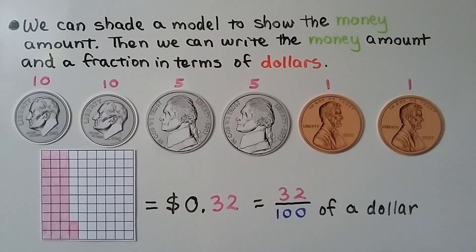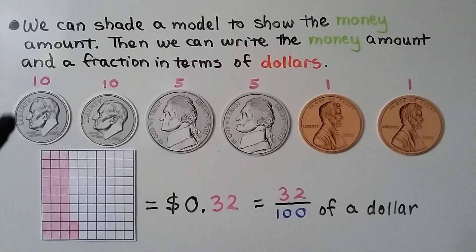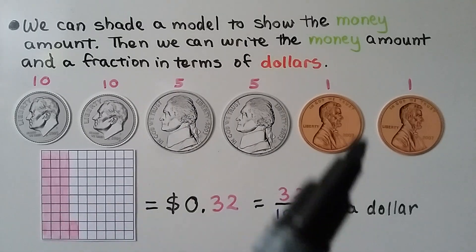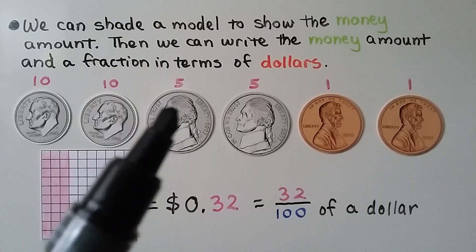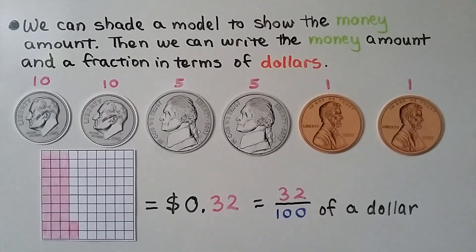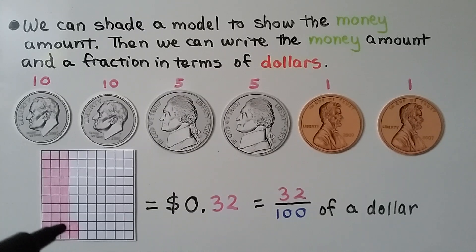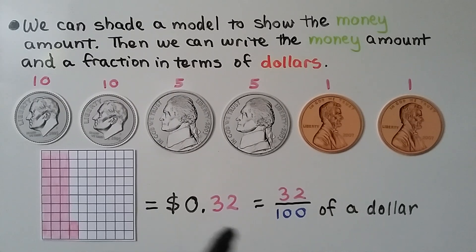We can shade a model to show the money amount, then write the money amount as a fraction in terms of dollars. We have two dimes, two nickels, and two pennies. Dimes are 10 cents, nickels are five cents, and pennies are one cent. We count starting with the greatest value: 10, 20, 25, 30, 31, 32. We fill in and shade 32 squares out of 100 — it's equal to 32 cents, or 32 hundredths of a dollar.